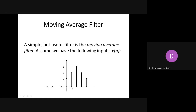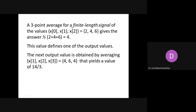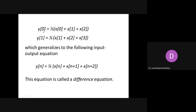For a causal moving average filter with a three-point average, at each point you use the present value, the previous value, and the value before that. You keep moving to the next point and taking the average at that instant. For a three-point average of a finite-length signal with values x[0], x[1], x[2], you get the average at each particular instant.